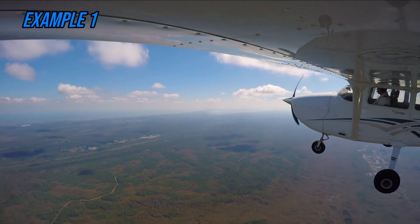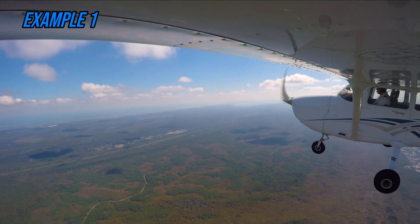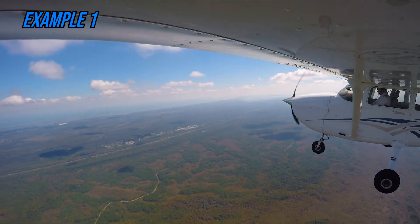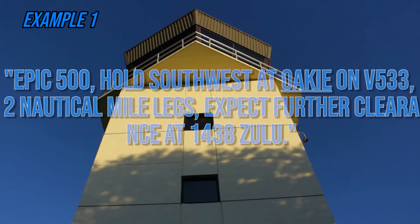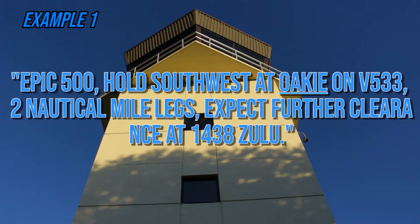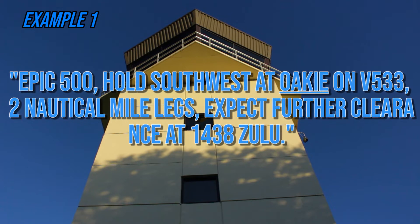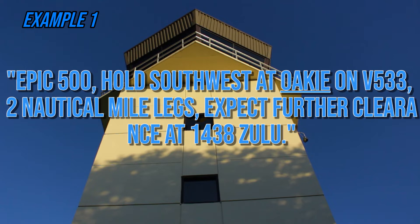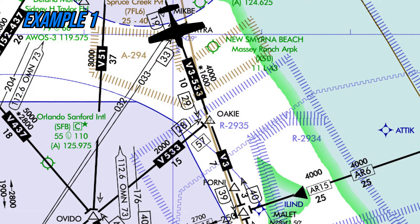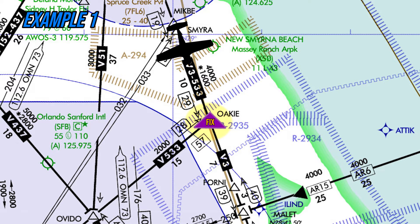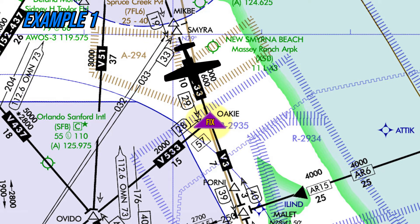Example 1. If a pilot was flying southeast along Victor 533 at 7,000 feet MSL and air traffic control instructs: 'EPIC 500, hold southwest at Okie on Victor 533, two nautical mile legs. Expect further clearance at 1438 Zulu.' The pilot would repeat their holding clearance to ATC and fly directly to the Okie fix. The pilot would also slow the aircraft to at least 230 knots, because they are holding between 6,001 and 14,000 feet MSL, at least three minutes prior to reaching Okie.